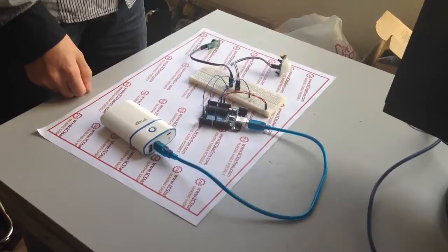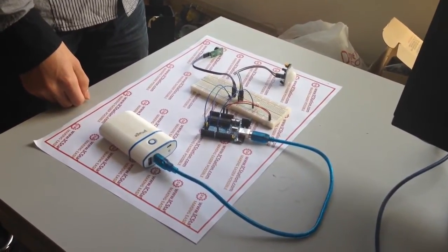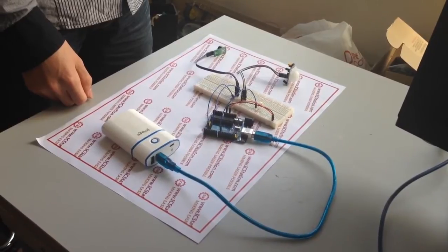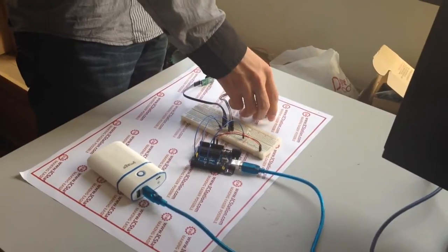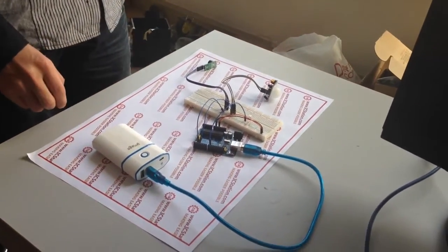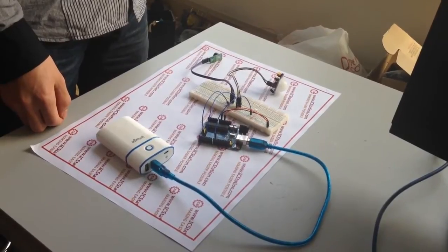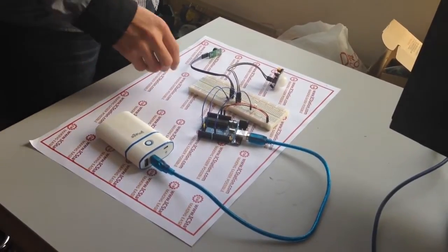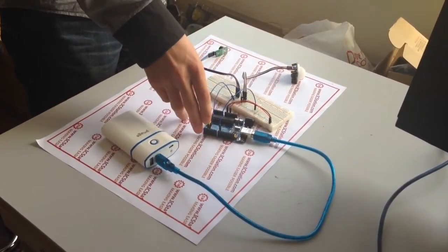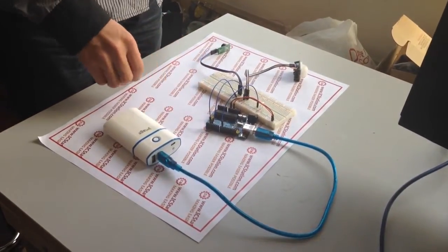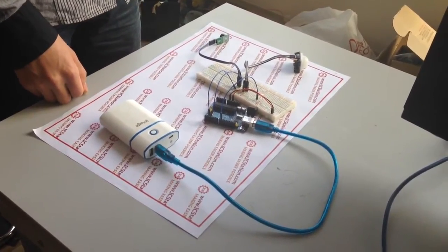We will briefly introduce the working principle of human body induction. When the infrared sensor detects that someone is passing by, it will output a high level to the Arduino-compatible board. As soon as the board receives the signal, it will start the alarm program, and the buzzer will sound and the LED light will flicker.